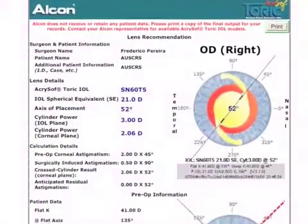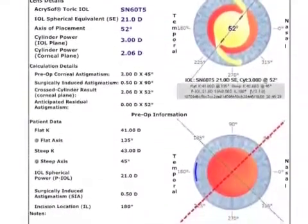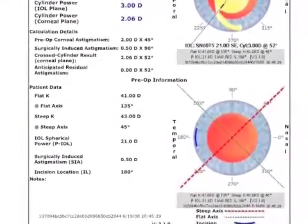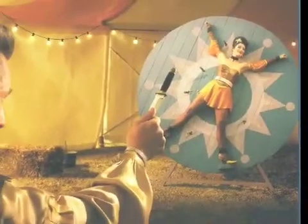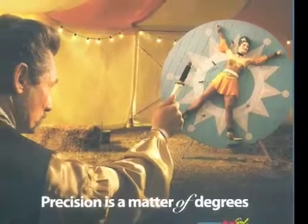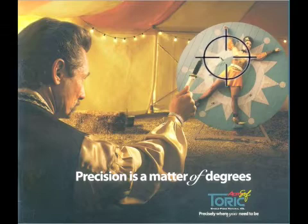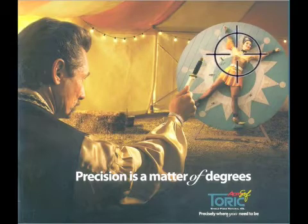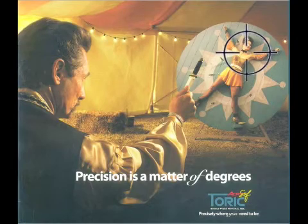Toric IOL implantation is another valuable option for astigmatism correction in cataract patients. The success of a toric IOL depends on its ability to maintain a stable position in the capsular bag in the longer term, and rotation of the IOL after implantation is the main problem associated with this modality. Each degree of rotation results in a loss of 3.3% of cylinder power. A rotation of 10 degrees minimizes the potential correction by 35%, and if the toric IOL rotates 30 degrees, the cylinder power is completely lost.